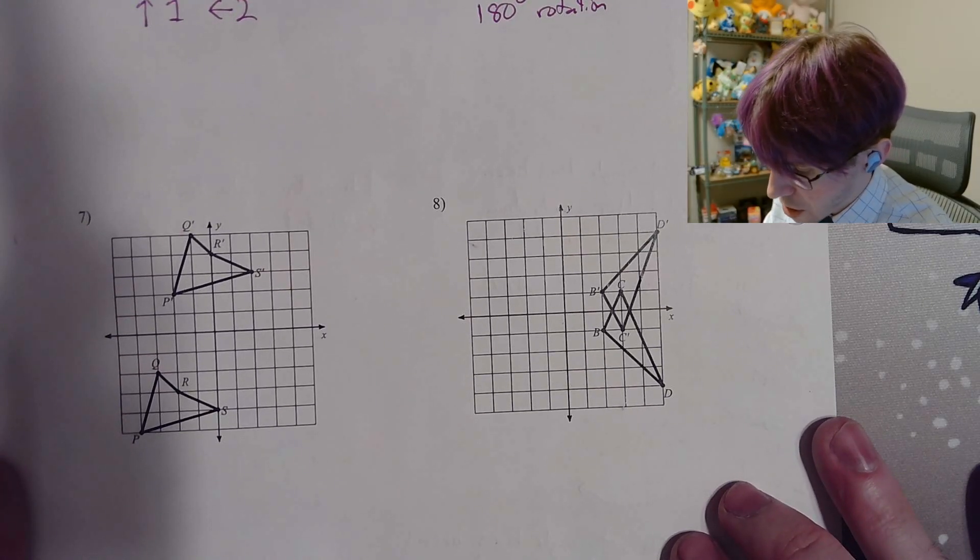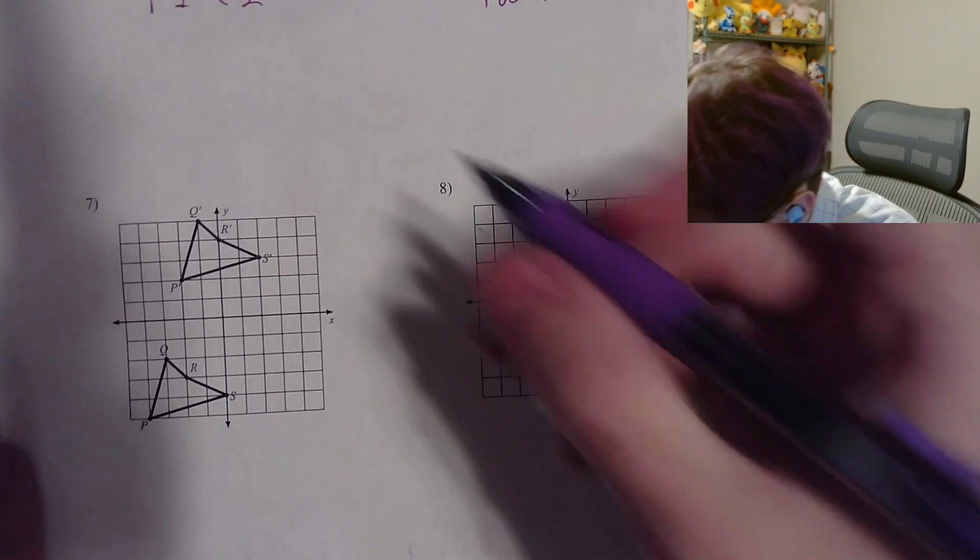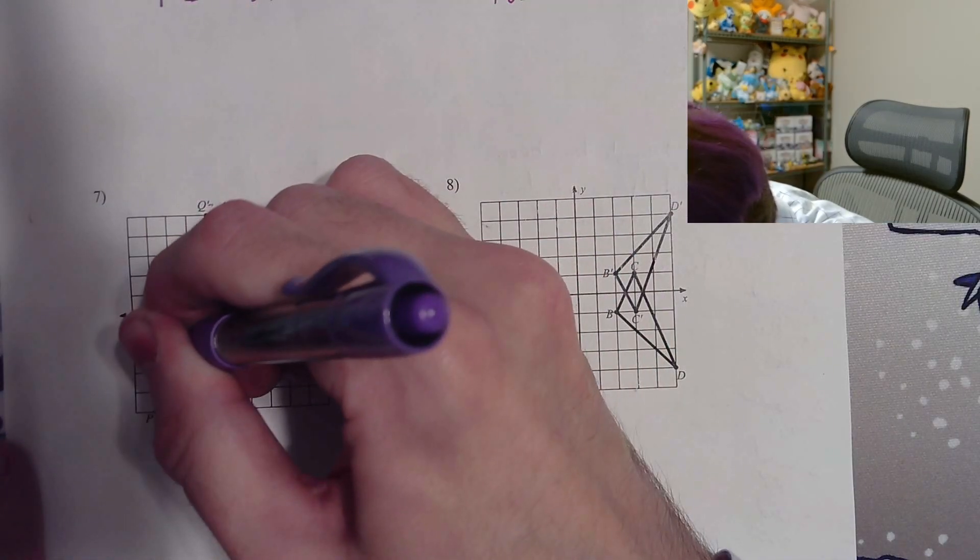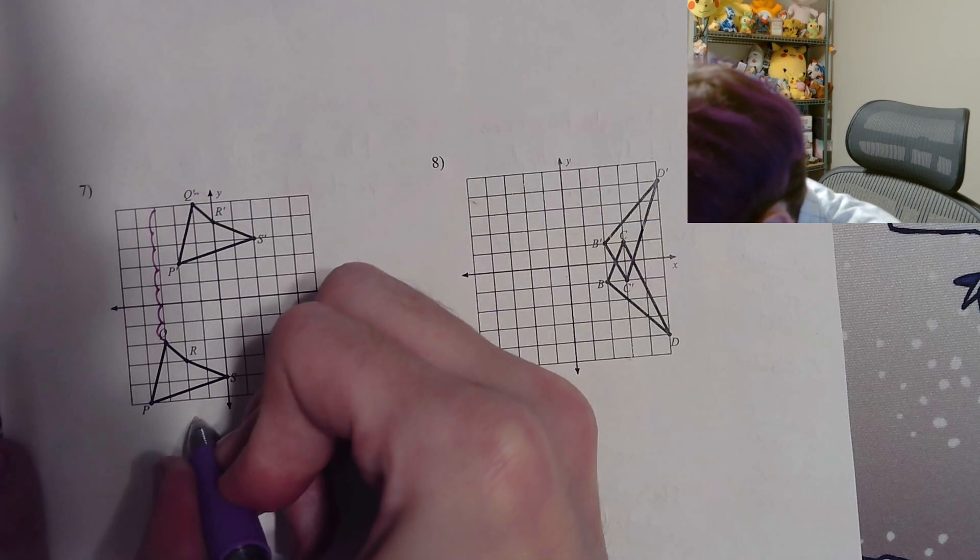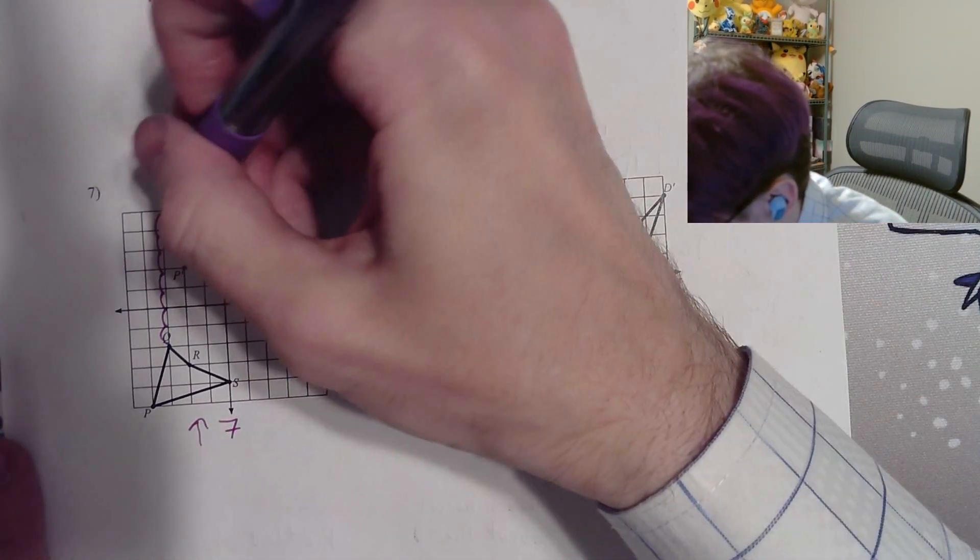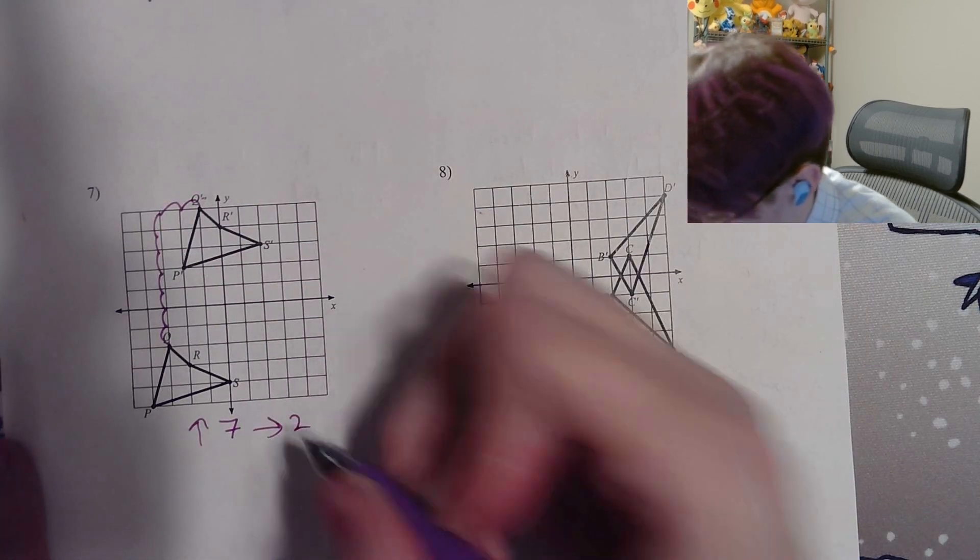This one over here, it looks like a crazy shape, but it's not that big a deal. You're going from Q to Q prime. So one, two, three, four, five, six, seven. So we're going up seven. And then we're going one, two to the right. Done. Maximum lazy.